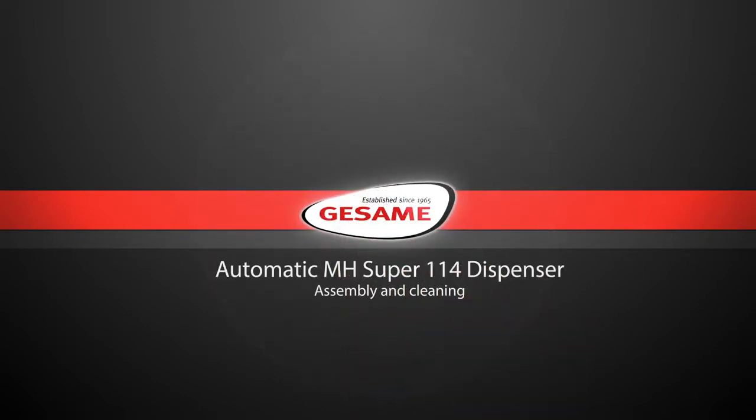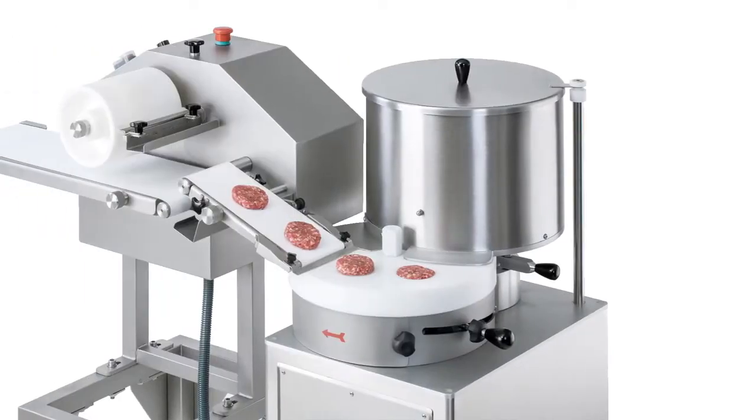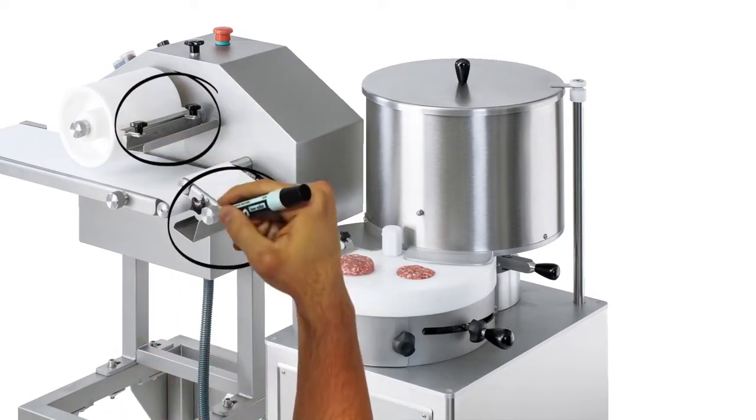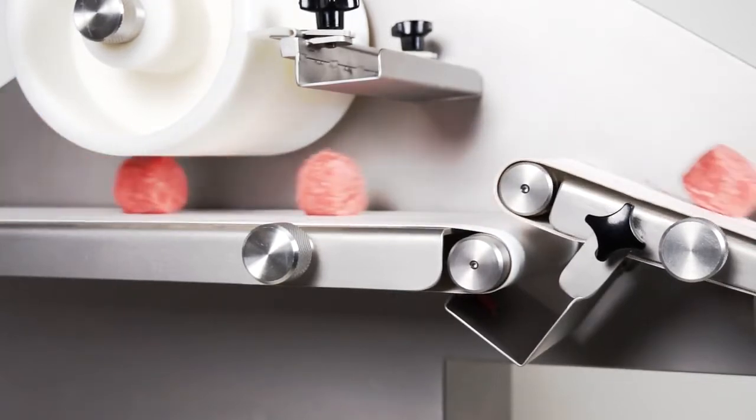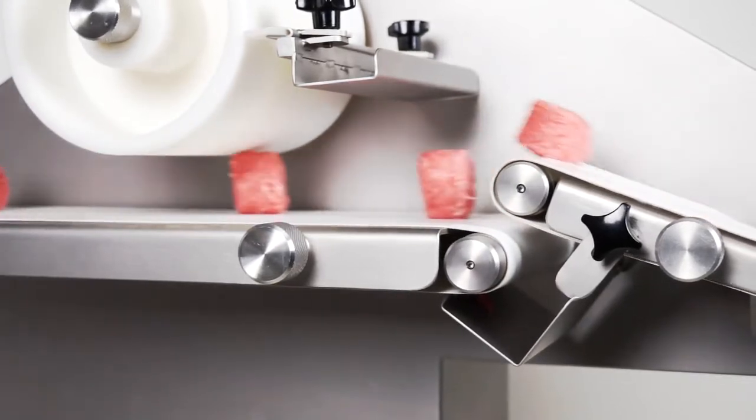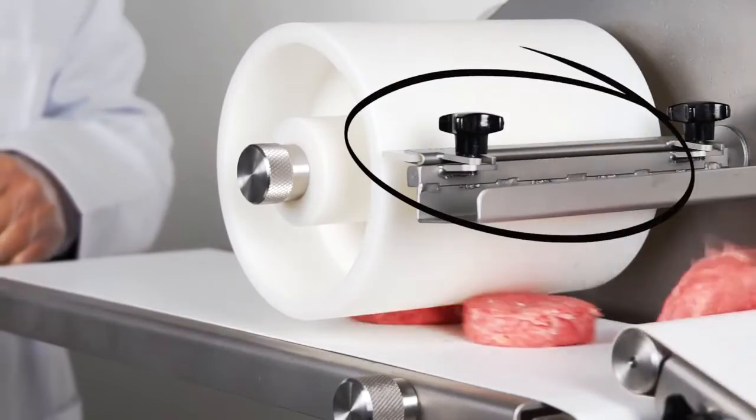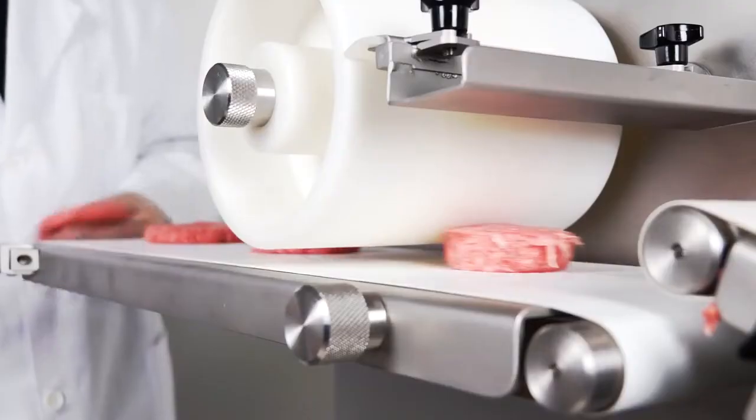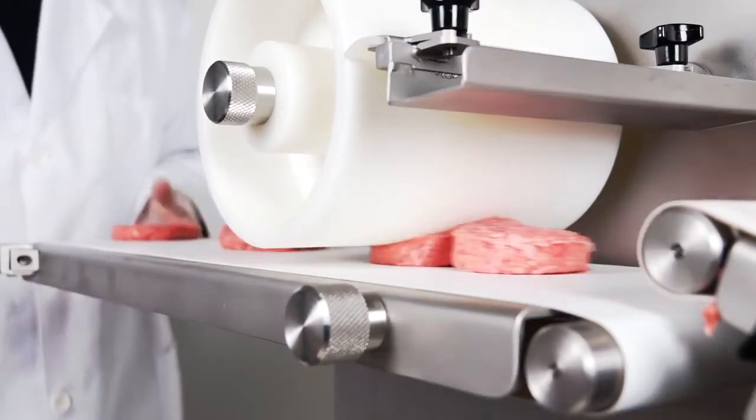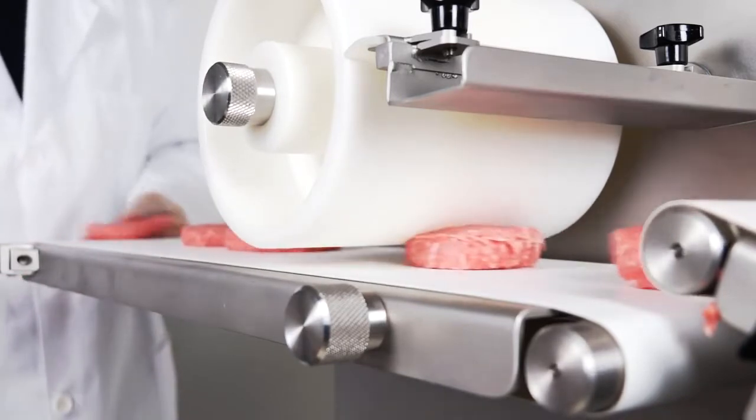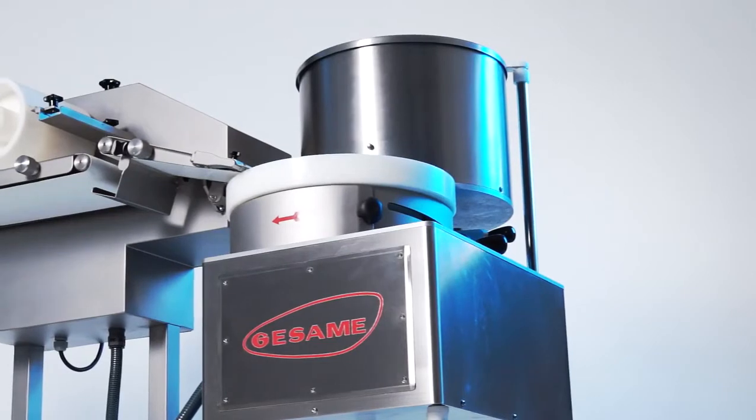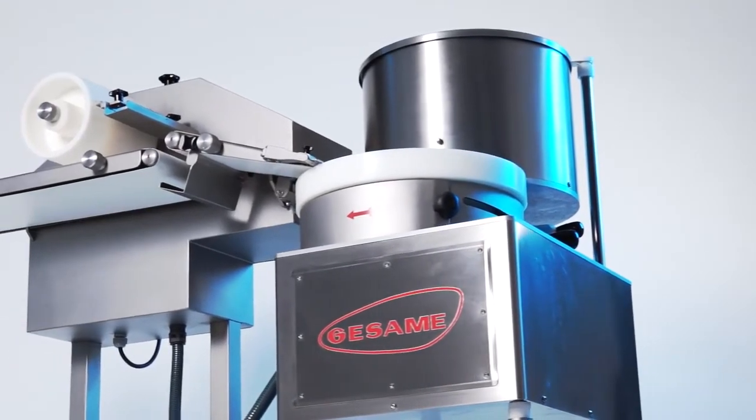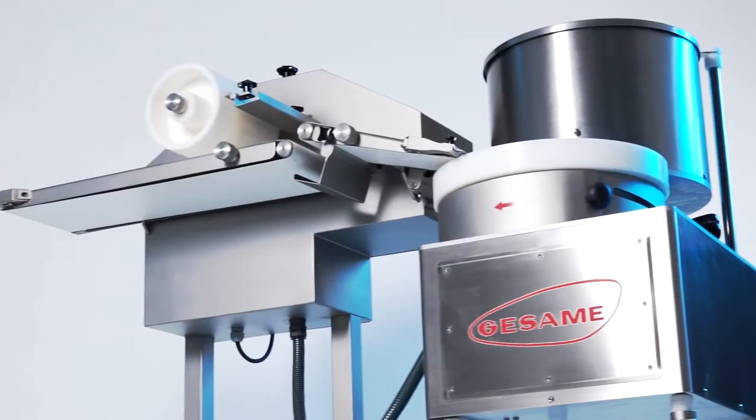Assembly and cleaning. The MH super 114 has two cleaners: one situated at the back of the tilted belt which allows product remains to be picked up once they are collected from the dispenser plate. The other situated on the roller allows for the collection and cleaning up of product remains once the roller has given the final shape to the portion. The practical design of the machine allows for quick assembly and disassembly and facilitates cleaning.